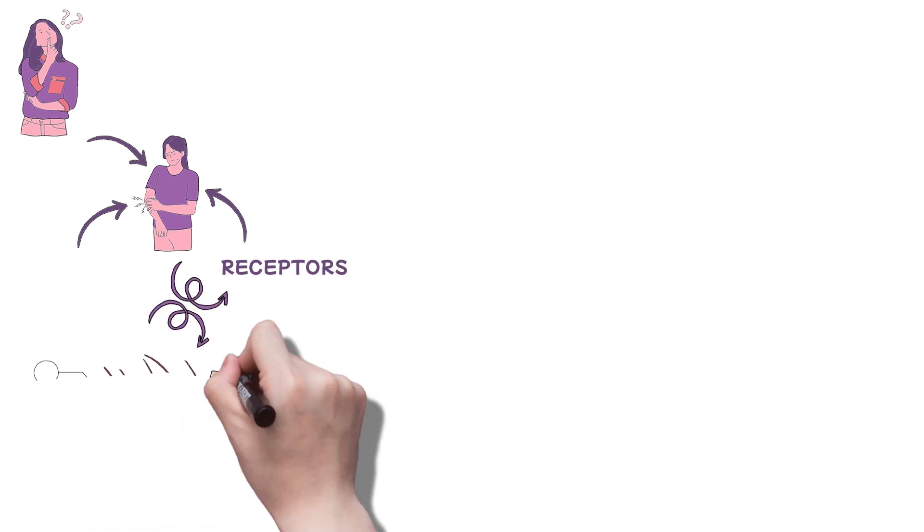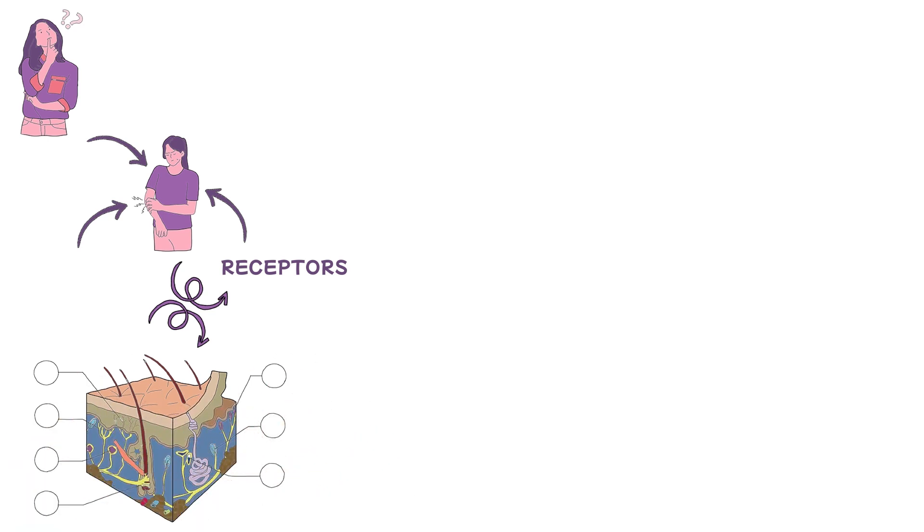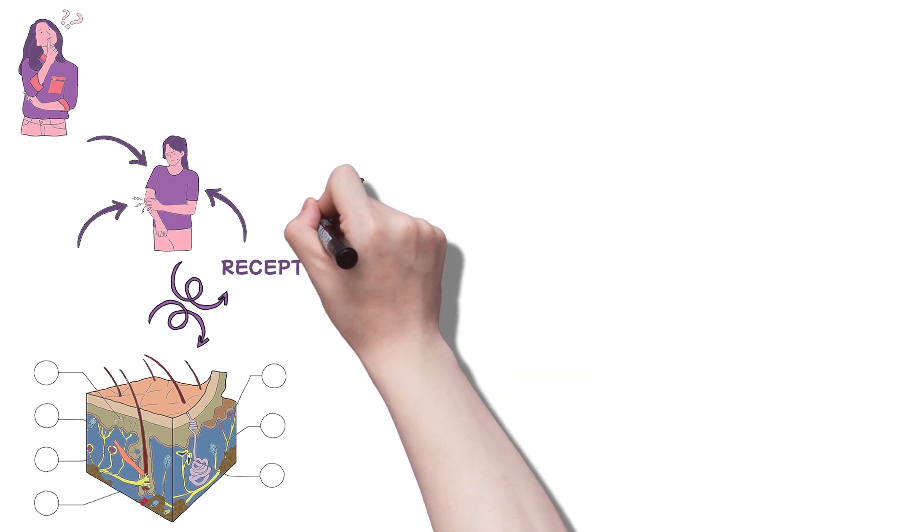You see, there are different types of receptors for different stimuli, and this forms the first point of the somatosensory pathways, which of course we'll discuss later in the video. So receptors are of four main types in the somatosensory system.